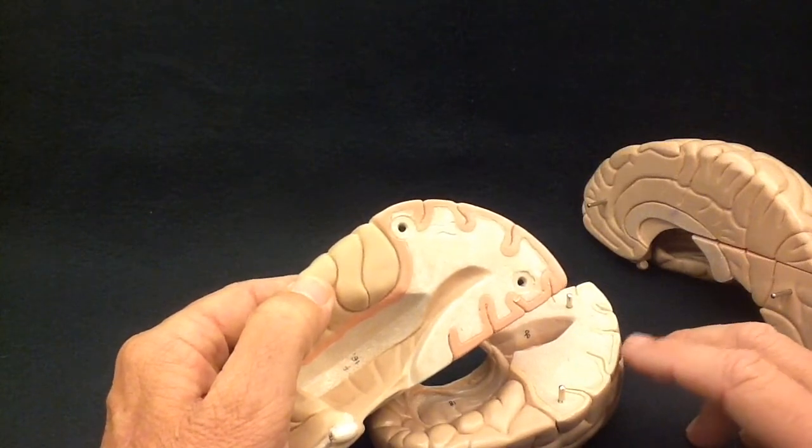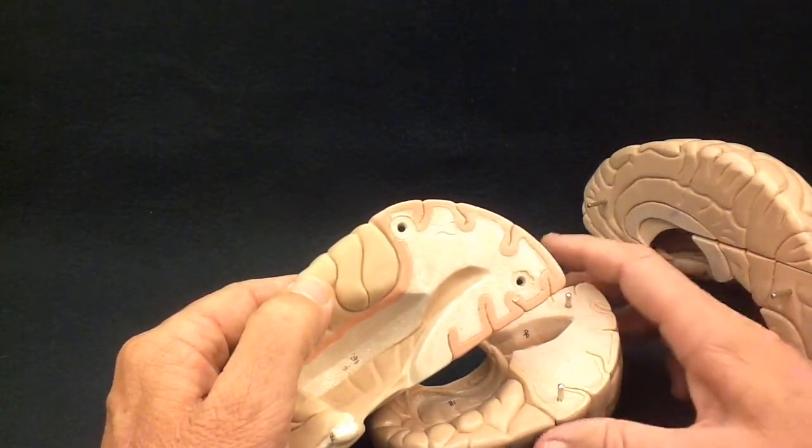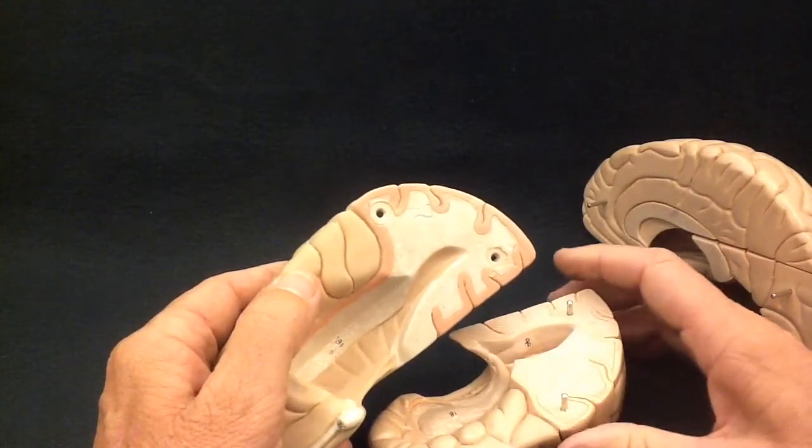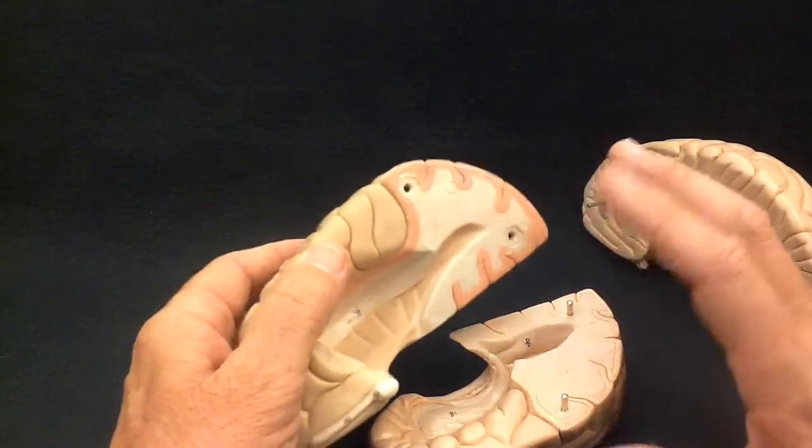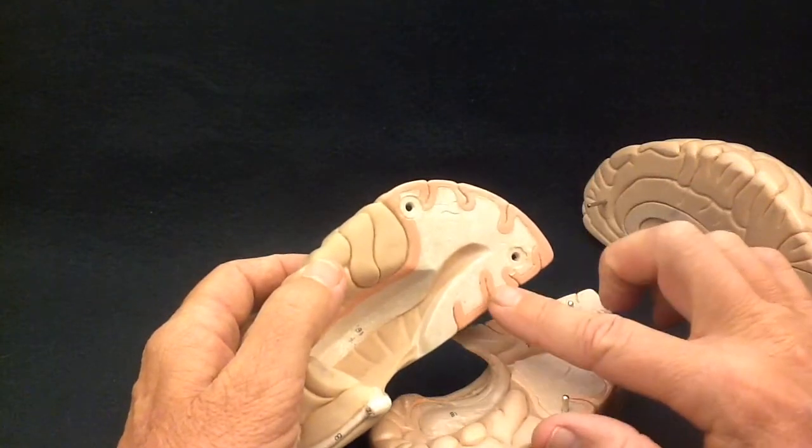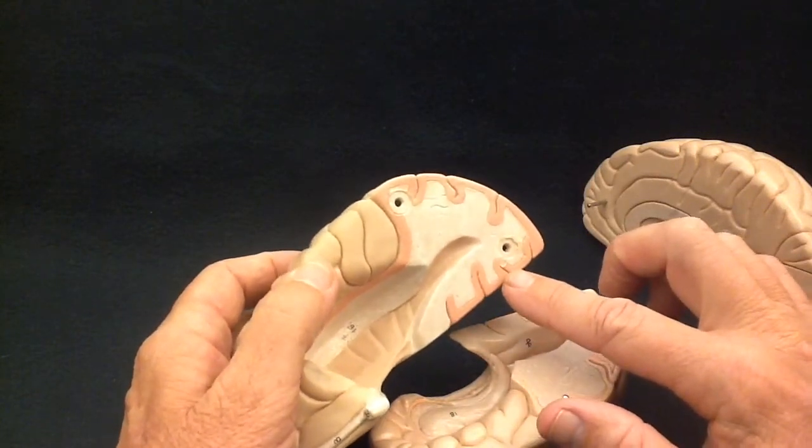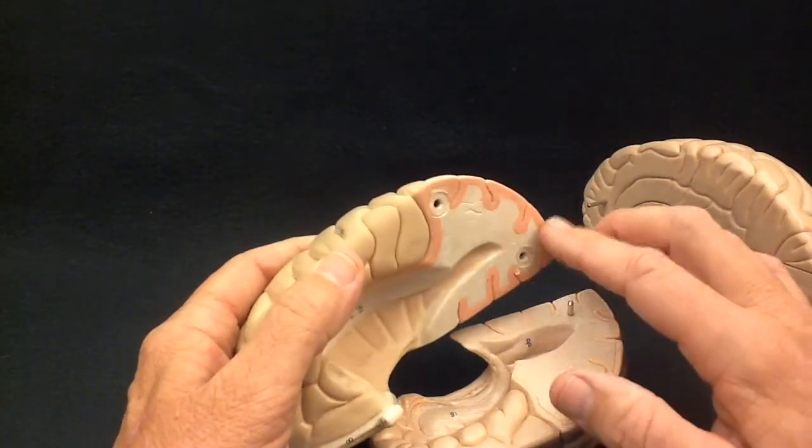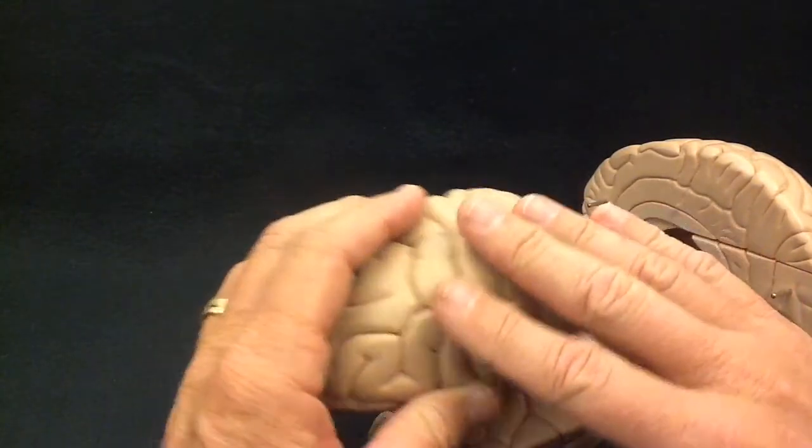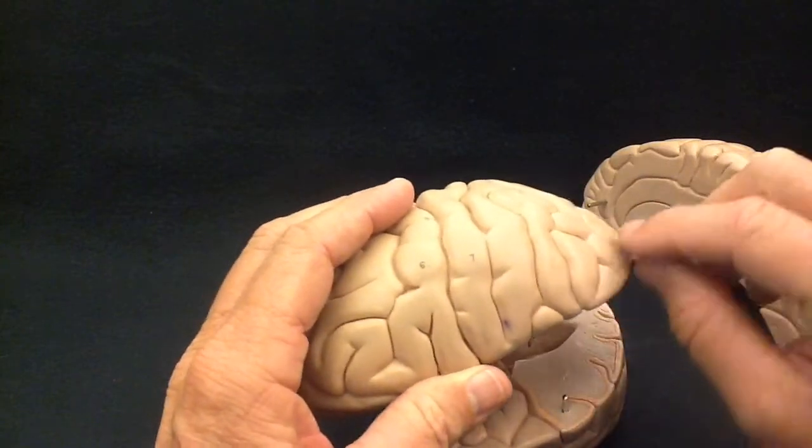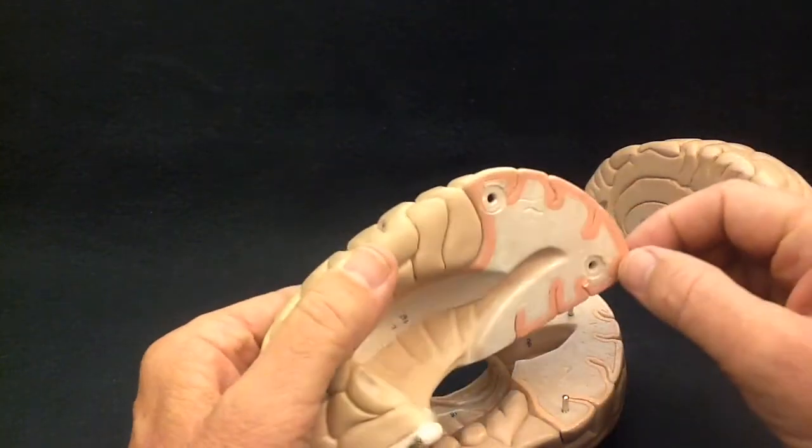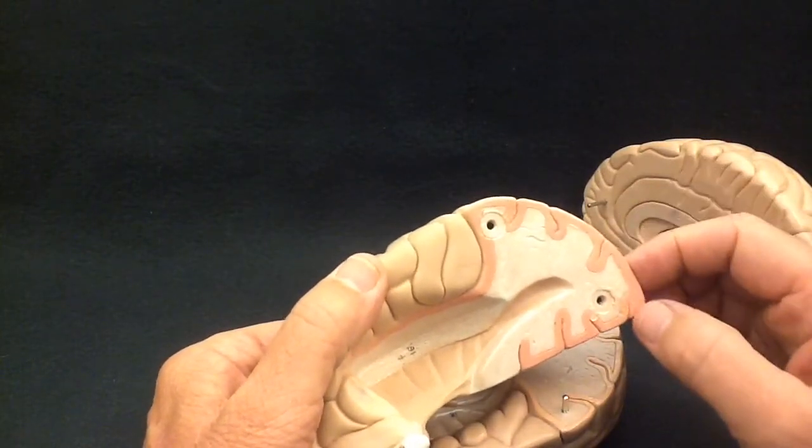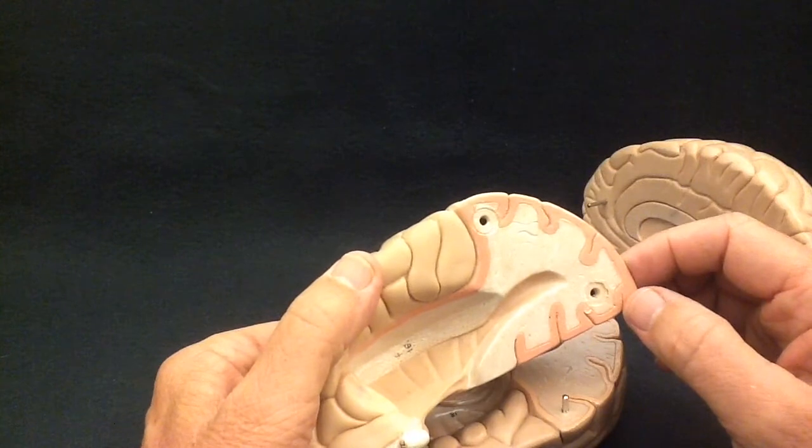Later in our second lecture on the nervous system, we will talk about the significance of gray matter and white matter. But just in a very simple way, all of your thinking, all of the processing that is done by your brain consciously, is done right here on the surface. This thin layer of surface here is where all of your thinking power is.